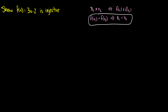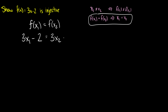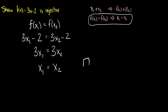So how do we do this? We start off and say, let's assume f(x1) = f(x2). So what do those functions look like? For f(x1), we're going to get 3x1 - 2 = 3x2 - 2. We can bring the twos over to the other side, so we get 3x1 = 3x2. Then we divide both sides by 3, and we get x1 = x2. So we have proven that it is injective, or one-to-one.